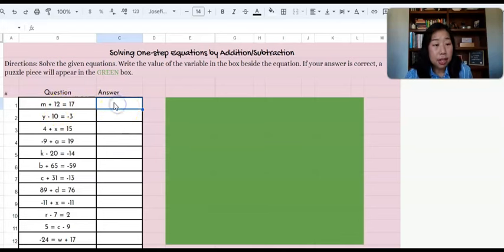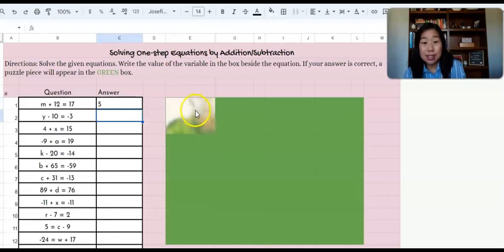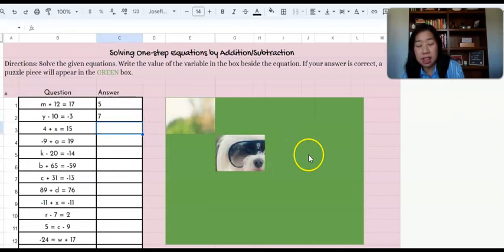So here I have M plus 12 equals 17. So my answer is going to be five. Ooh, I know I got it right because a piece of the image has popped up. Next question. Y minus 10 equals negative three. What if I did negative seven? Oops. Okay. That means I did something wrong because nothing happened. So, oh, oops, it's not negative seven. It's positive seven. So a piece of the image now has appeared. So I know, bam, I got it correct.